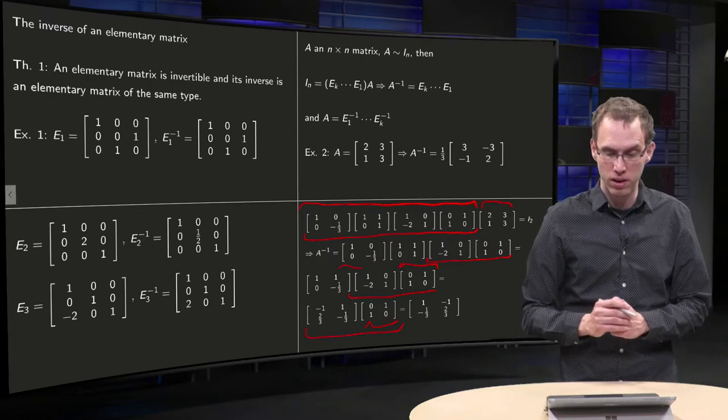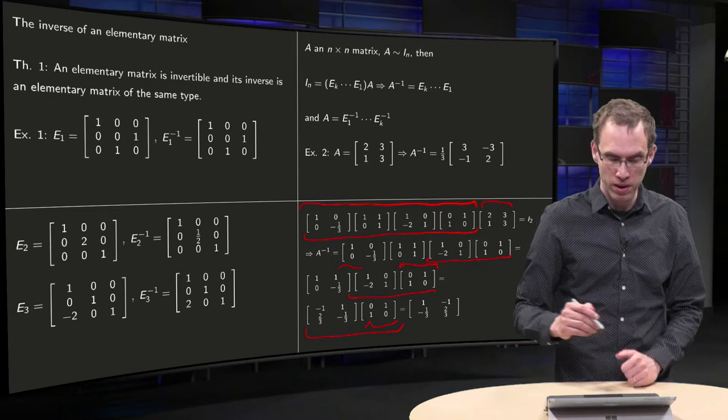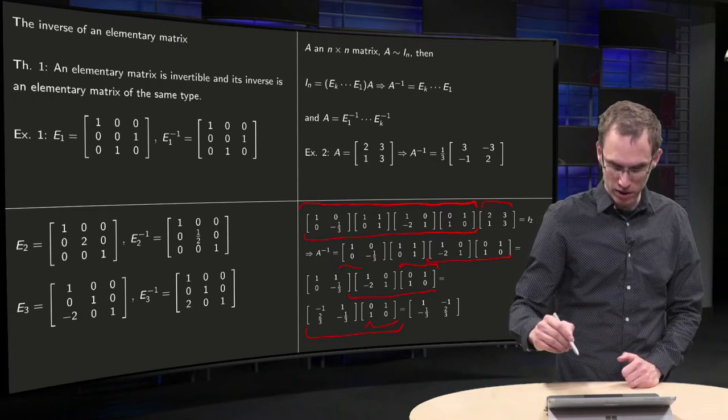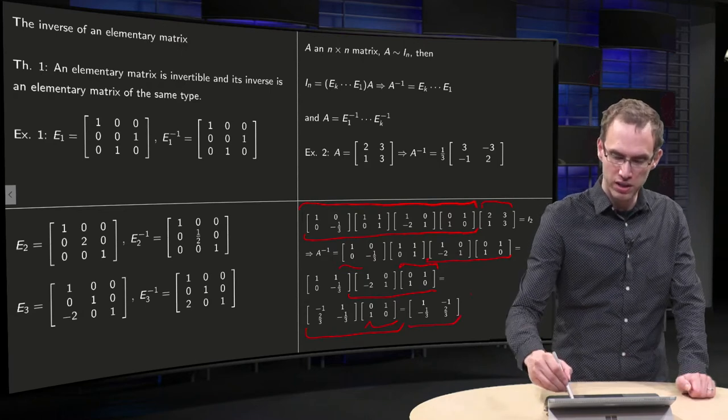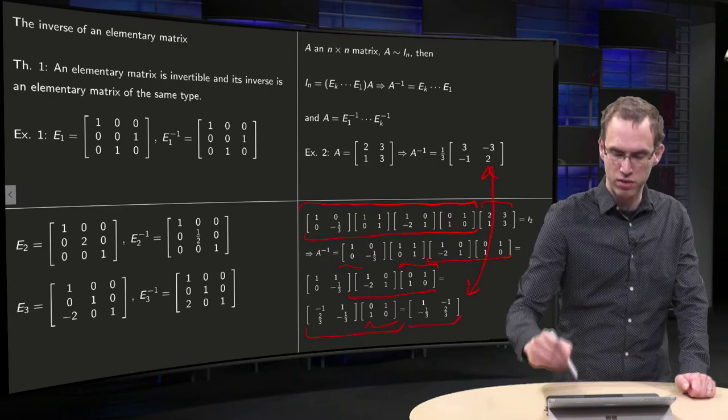And finally, we compute the last product. We get a 1, minus 1 over 3, a minus 1 and a 2 over 3, and we have our A inverse. And as you can see, it is indeed the same as this one.